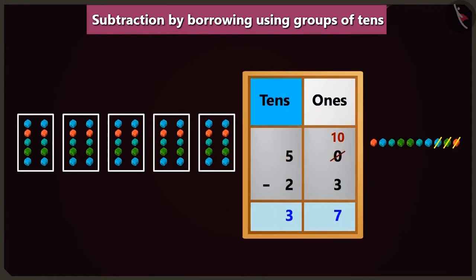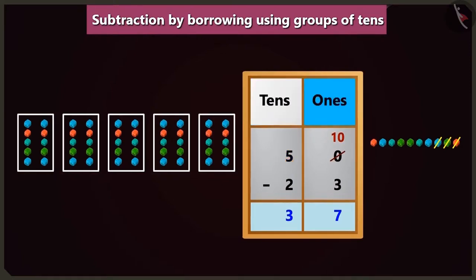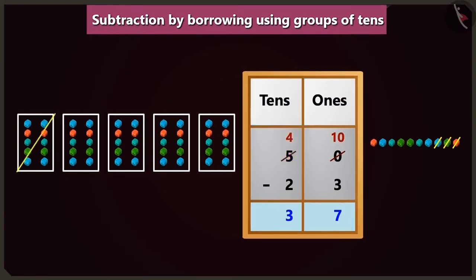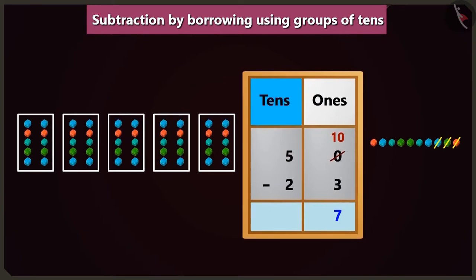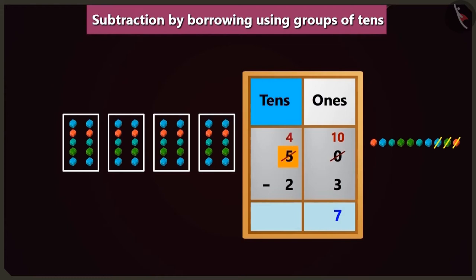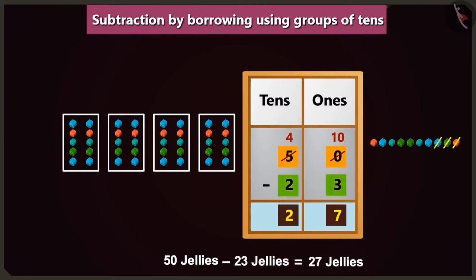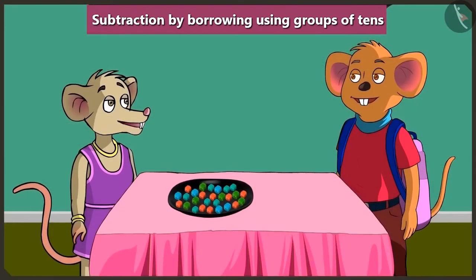Look here carefully. You borrowed one from five tens of the box of tens and brought ten ones to the place of ones, but you forgot to subtract one ten from five tens in the box of tens. You are right, Choo-Choo. So here if we subtract one ten from five tens in the box of tens, then it will be four tens. If we subtract two tens from four tens, then we will be left with two tens. So this way, if we subtract twenty-three jellies from fifty jellies, then you will be left with only twenty-seven jellies. Now I have understood it well — thank you so much, Choo-Choo.